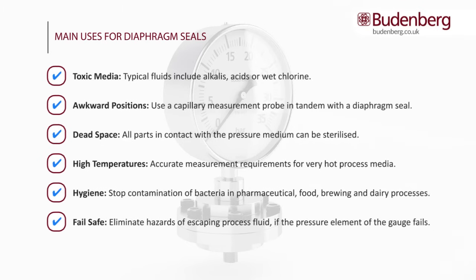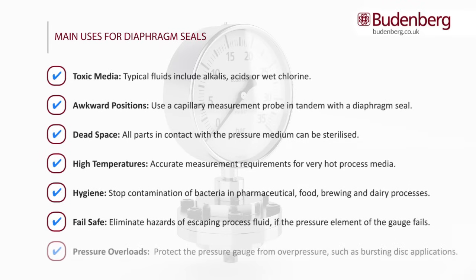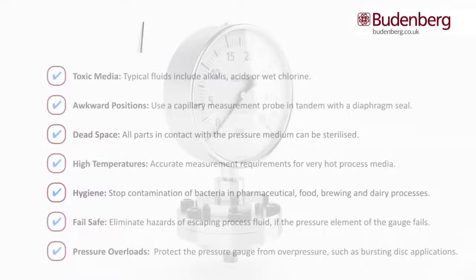Failsafe: to eliminate possible hazards due to the escape of process fluid if the pressure element of the gauge fails. Pressure overloads: to protect the pressure gauge from overpressure, such as bursting disk applications, i.e. where the pressure can be 0 to 1 bar but required to withstand up to 99 bar.